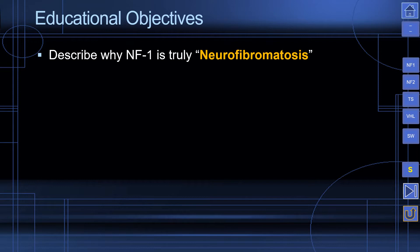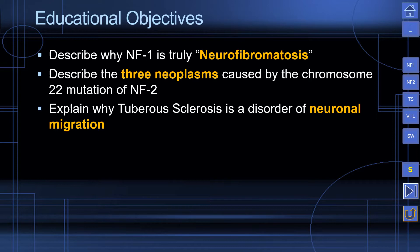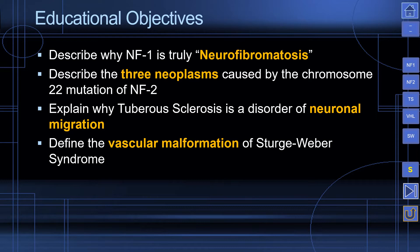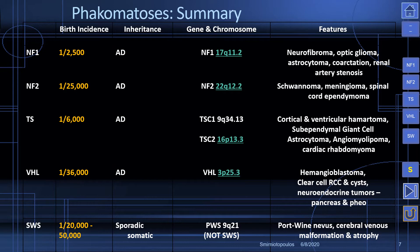Our educational objectives: we want to describe why NF1 is truly characterized by multiple neurofibromas; discuss three neoplasms caused by the chromosome 22 mutation that causes neurofibromatosis type 2; explain why tuberous sclerosis is a disorder of neuronal migration; define the vascular malformation of Sturge-Weber syndrome; and describe the CNS and visceral manifestations of Von Hippel-Lindau disease.